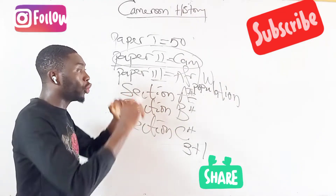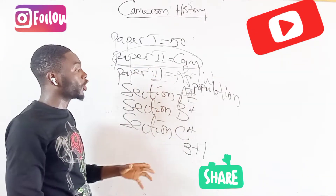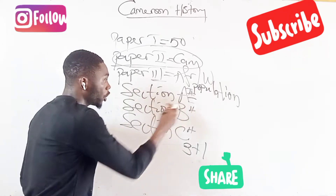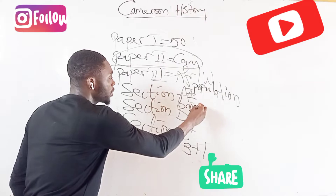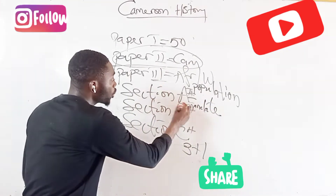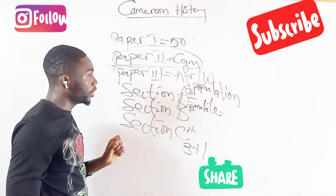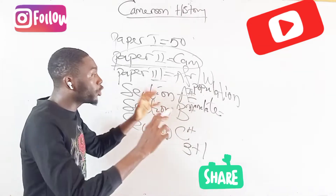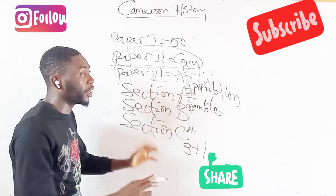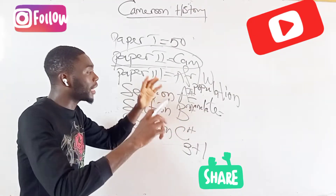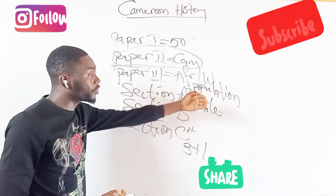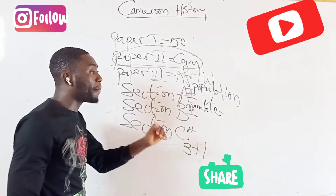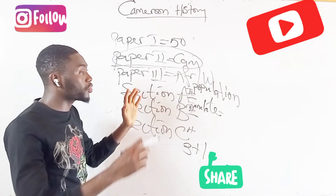In section B, you need to know the technicalities of how questions are being set, because if you cannot master how and what they ask, you will not be able to answer questions properly. In section B, 4 questions are going to come. One question will come from the mandate in British Cameroon — covering the administration of Southern Cameroon as an integrated part of Nigeria, reasons why Southern Cameroon was administered as part of Nigeria, the terms of the mandate and the extent to which the British respected them as given by the League of Nations, indirect rule under mandate, and native authorities.